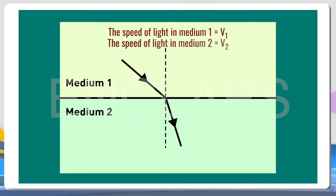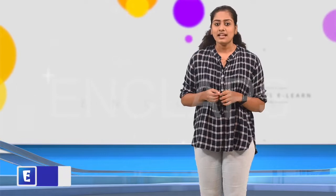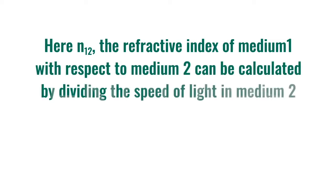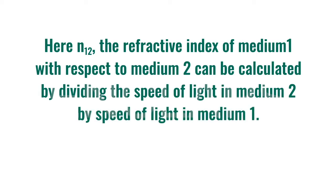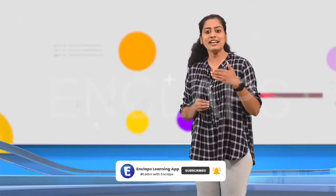Light rays are coming from medium 1 to medium 2. The speed of light in medium 1 is taken as V1 and that of medium 2 is taken as V2. The refractive index of medium 1 with respect to medium 2 is represented as N12. N12 can be calculated by dividing the speed of light in medium 2 by the speed of light in medium 1. That is, N12 = V2 / V1. Here is one short trick to memorize this equation: whichever medium whose refractive index is to be determined, the velocity of light in that medium will come in the denominator.